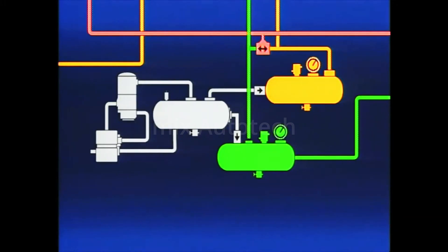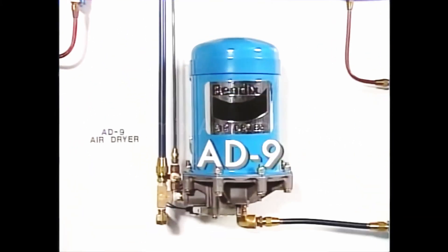To solve this problem, a desiccant air dryer, like this Bendix AD9, is installed to remove 100% of the liquid and solid contaminants and approximately 95% of the water vapor, prior to entering the brake system.